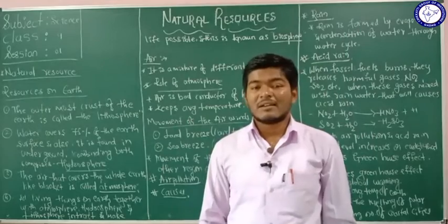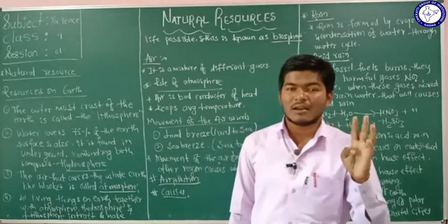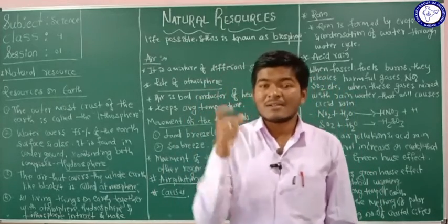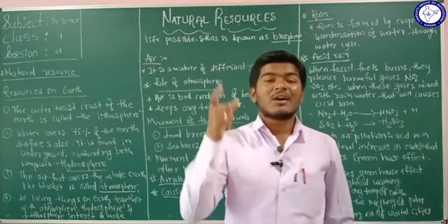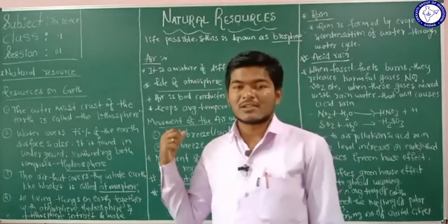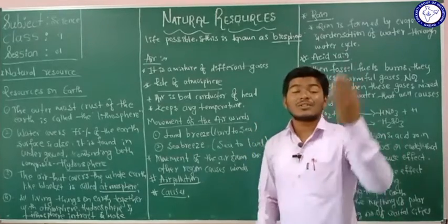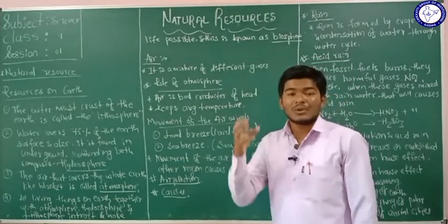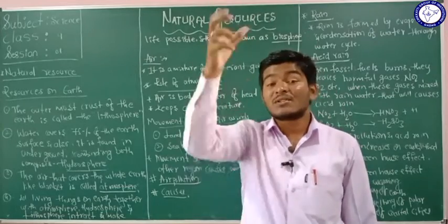Life on earth is present due to only two conditions: one is water and another is light. These are the most important materials. Air is also essential — these three components, air, water, and light, are the main important components for the presence of life on earth. We are going to study the resources with reference to four spheres.